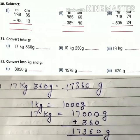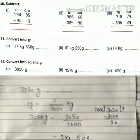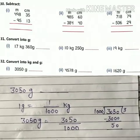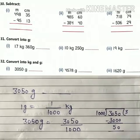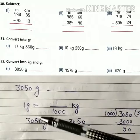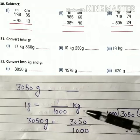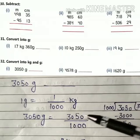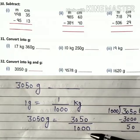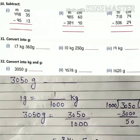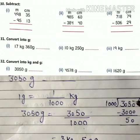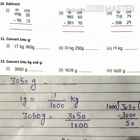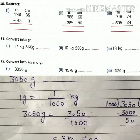Question 32: convert 3050 grams into kilograms and grams. One gram is equal to 1 by 1000 kilograms. Divide 3050 by 1000: 3000 goes in once giving quotient 3, and 3050 minus 3000 equals 50. So the quotient is the kilograms and the remainder is the grams — answer is 3 kilograms and 50 grams.